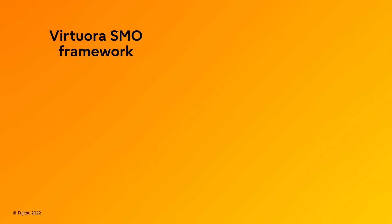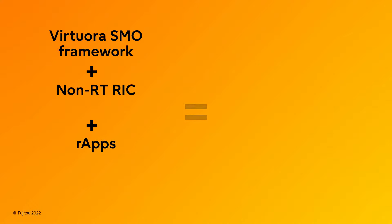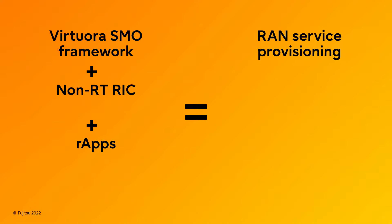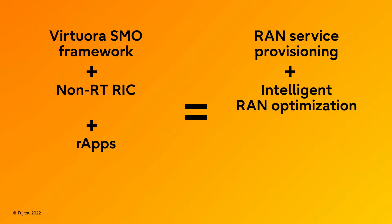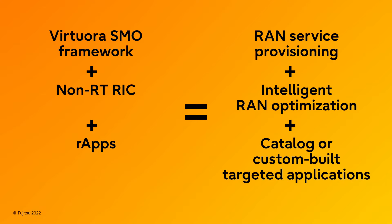The Virtura SMO framework, RAN Intelligent Controller, and Application Catalog enable RAN service provisioning and intelligent RAN optimization by providing policy-based guidance informed by native data analytics and AI/ML. The Virtura SMO framework supports southbound interfaces to third-party network functions, which makes it easy to integrate new applications into multi-vendor ecosystems.